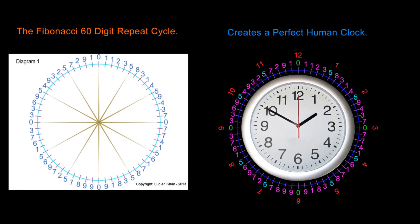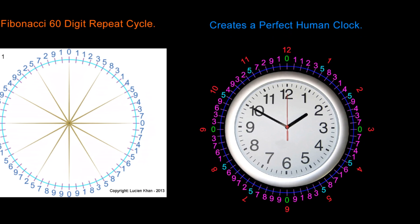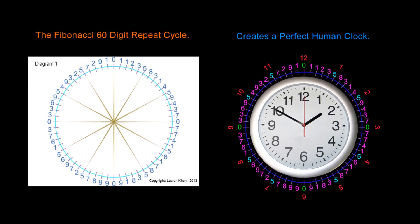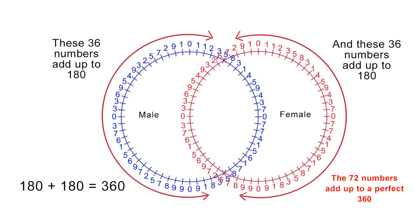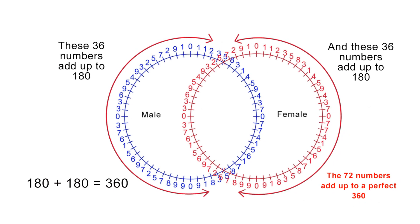In these videos, I have shown you how the Fibonacci series is creating a perfect 60-digit human clock and how that clock is encoded with vast amounts of mathematical information. When we take that Fibonacci 60-digit clock and enter it into the Vesica Pisces, it immediately generates the number 360.